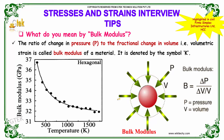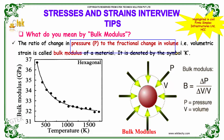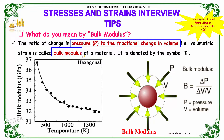What do you mean by bulk modulus? The ratio of change in pressure to the fractional change in volume — that is your volumetric strain — is called the bulk modulus of a material. It is denoted by the symbol K.